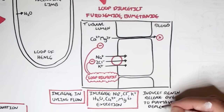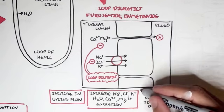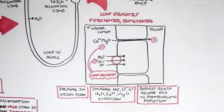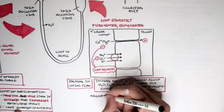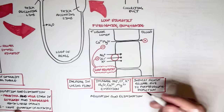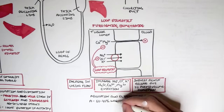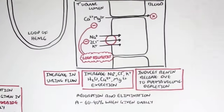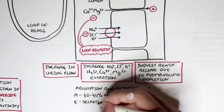Renin, as you know, will want to increase blood pressure. For the absorption and elimination of loop diuretics: about 60–90% is absorbed when given orally, and elimination occurs via secretion through the proximal tubule.